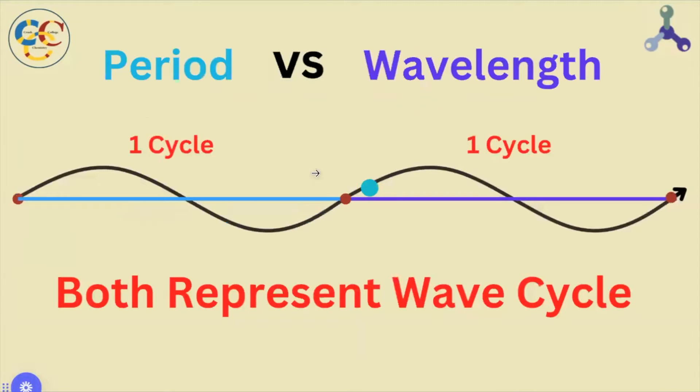Before we delve into the differences between these two variables, it's important to point out that both period and wavelength represent a wave cycle. But what exactly is a cycle, such that it can be described or represented by multiple variables at once?